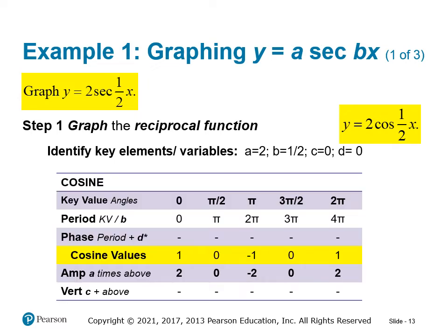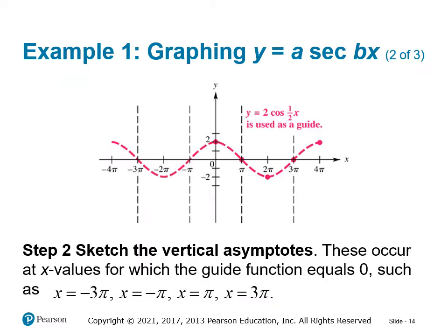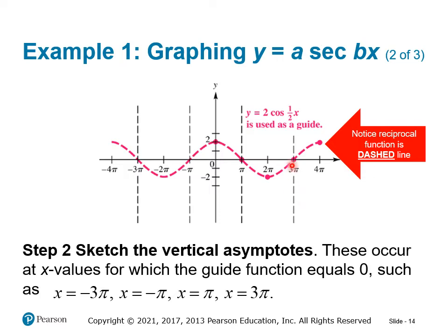We build our table — we know how to do this. We see our x-values and y-values. Notice that we've graphed this reciprocal function as a dashed line. We then put vertical asymptotes wherever that reciprocal function crosses the x-axis — those are the dashed vertical lines that the secant will never cross or touch. They'll get closer and closer. So wherever cosine touches the x-axis, we draw the asymptotes in.